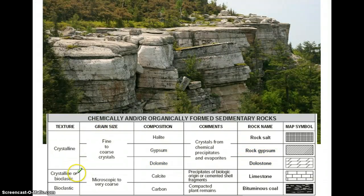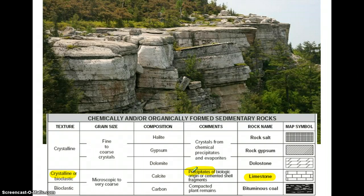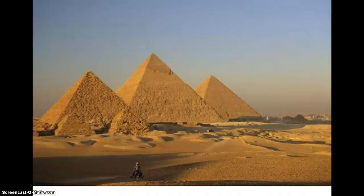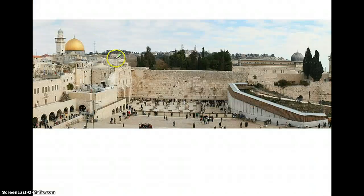The final crystalline rock on your chart is limestone, which can form two ways. The limestone cliffs shown here were formed by precipitation — enough limestone was in the water that it clumped together, fell to the bottom, and was deposited there. The pyramids in Egypt are made out of limestone, as are many of the rocks in Jerusalem — this is the Western Wall, and it's made of limestone.